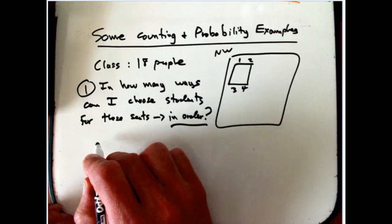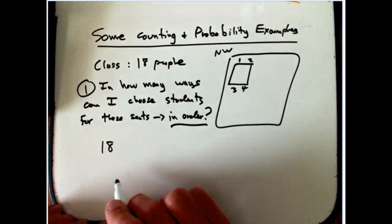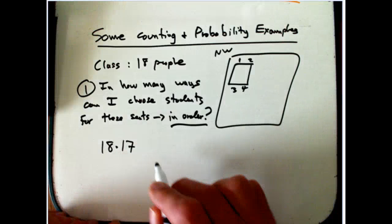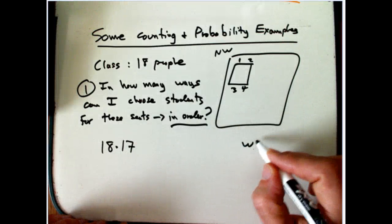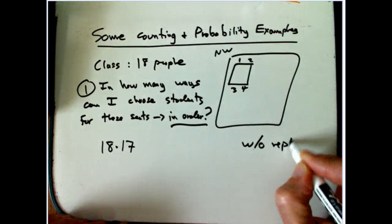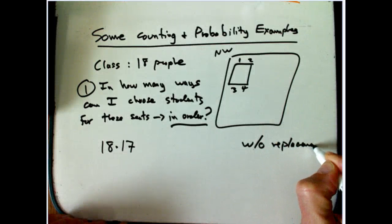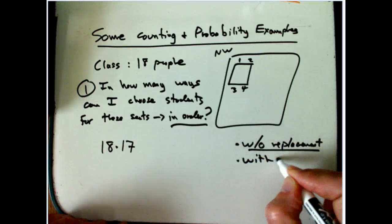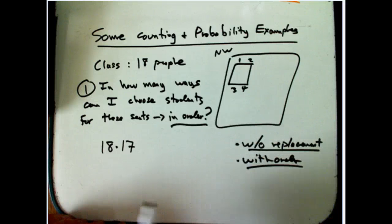We've got 18 choices for the first slot. I can't choose that student again, so this is without replacement. That's one of our fundamental questions we always want to ask. And it's with order.